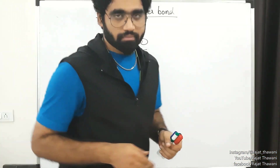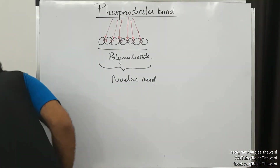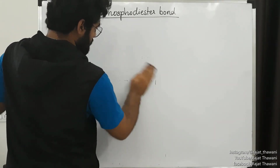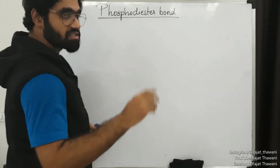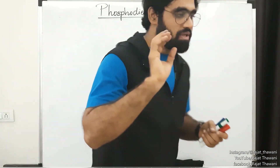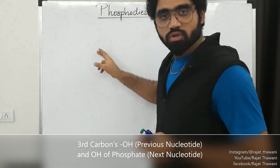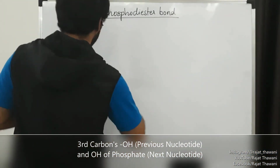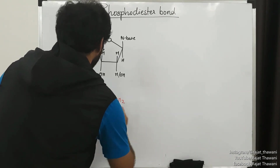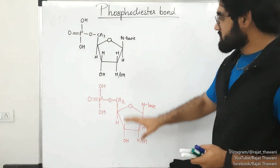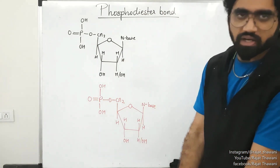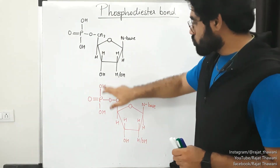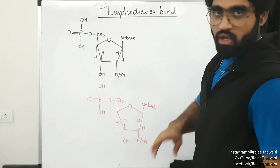Let's draw the structure of a nucleotide - we both will draw together. Draw with me; if you are not able to draw, please see the previous video. Please construct two nucleotides one below the other. The nucleotide should be in such a way that the first nucleotide's OH group should coincide or be just above the phosphate group of the next nucleotide. I have drawn two nucleotides - this is the first nucleotide, second nucleotide. Draw any number of nucleotides in a straight line, but make sure the OH group and OH group of phosphate coincide.